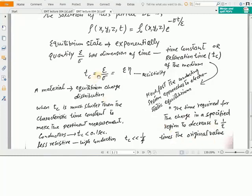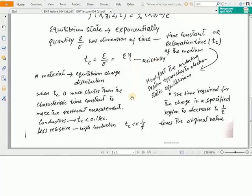Here Tc equals epsilon over sigma and it can be expressed as epsilon into eta, where eta represents the resistivity. In a practical experiment, when a material wants to reach its equilibrium charge distribution condition, Tc must be much shorter than the characteristic time constant to make the pertinent measurement. In conductors, Tc must be less than 0.1 seconds, and Tc must be very much less than 1 over f, where f is the highest frequency involved in the experiment. If the frequency is high, the time constant is small, meaning that a system approaches its equilibrium condition in a very rapid manner. So we can say that the system is less resistive and has high conductivity. Thank you.